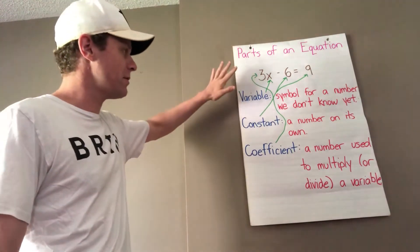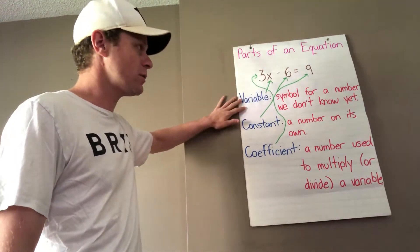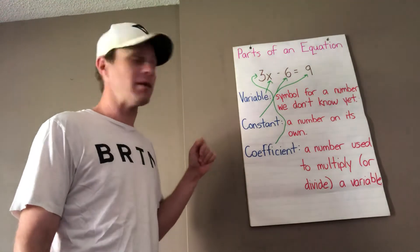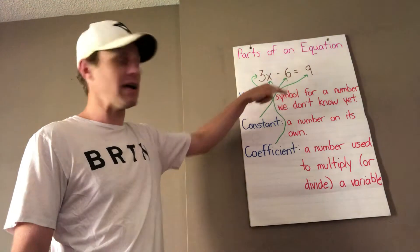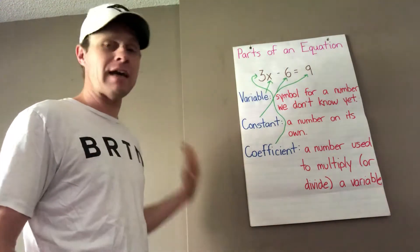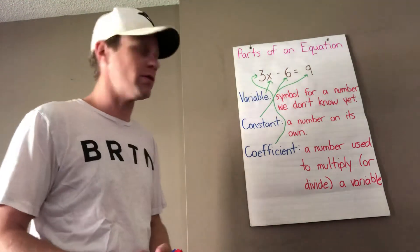So remember we have a variable which is the symbol for a number that we don't know yet. So in this equation, 3x minus 6 equals 9, our variable is x because we don't know the value of x right now.